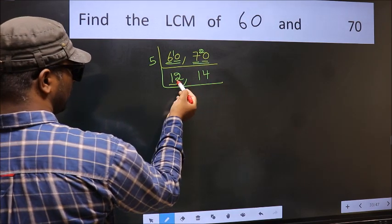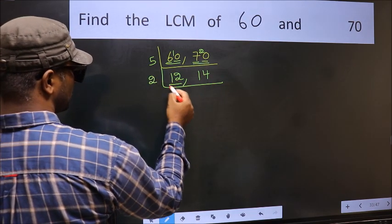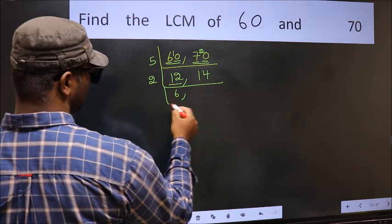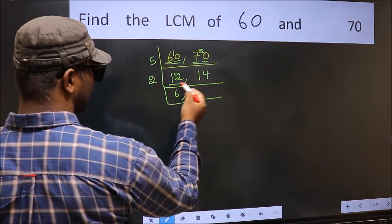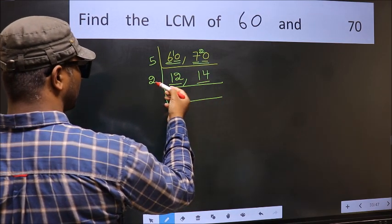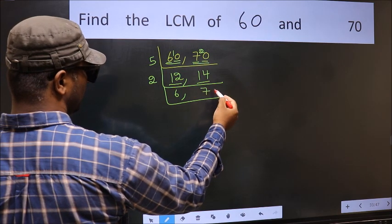Now here we have 12. 12 is 2 sixes, so 2 times 6 is 12. The other number is 14. When do we get 14 in the 2 times table? 2 sevens are 14.